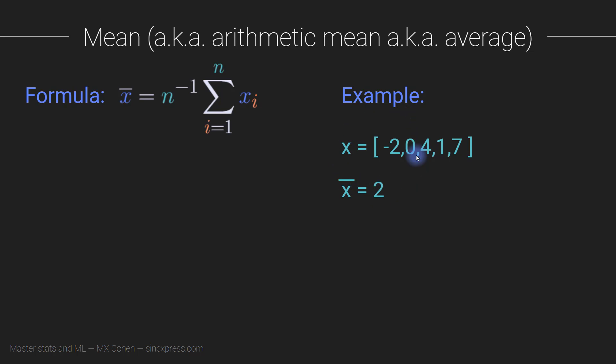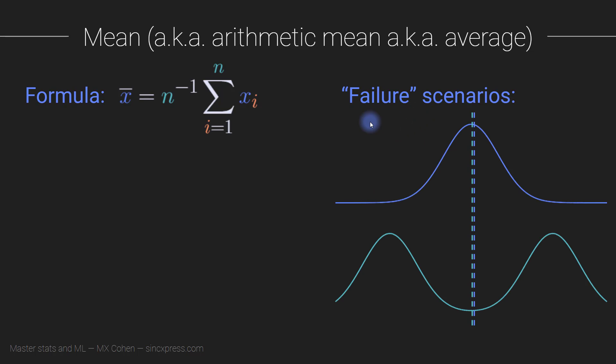Now the mean is very simple to compute and usually a good measure. But it's important to realize it's not always an appropriate measure of central tendency. Here you see an interesting case where for this blue distribution, the mean looks good and tells us something about the distribution.